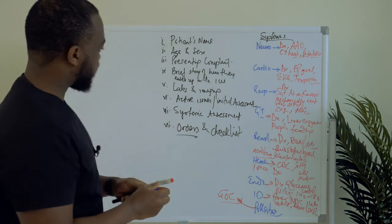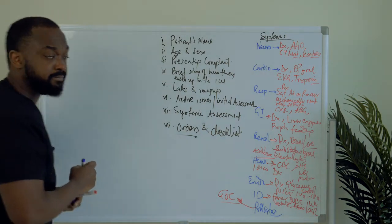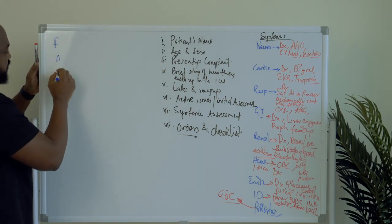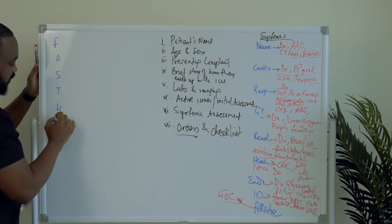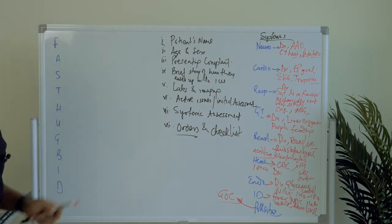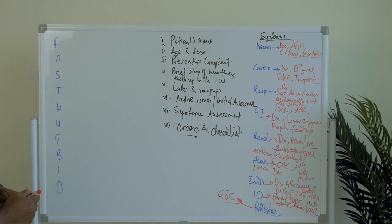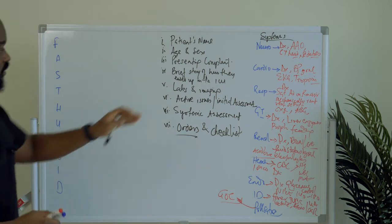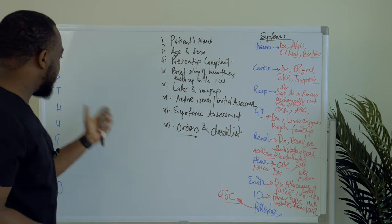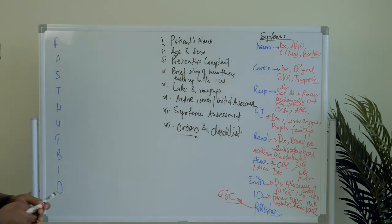Then we talk about our checklist. I use the mnemonic FAST HOG BID — some of you may have encountered that. After doing all these systemic assessments, I'm then talking about things I shouldn't miss. A lot of them we already mentioned, but doing it twice for a patient in the ICU doesn't hurt — you're just making sure you're not missing anything.